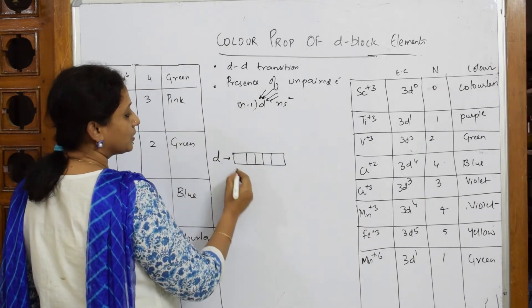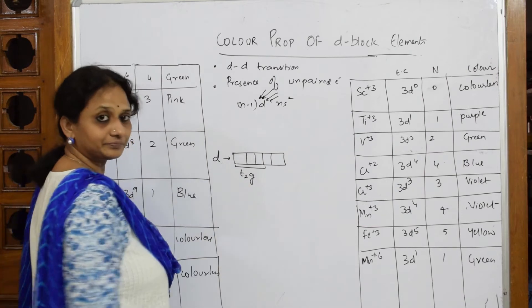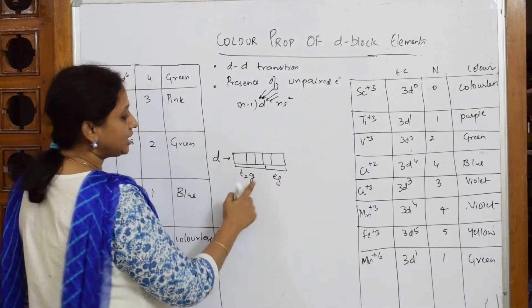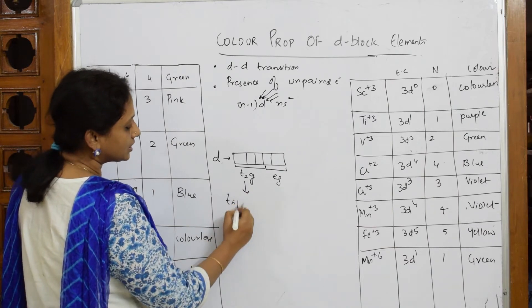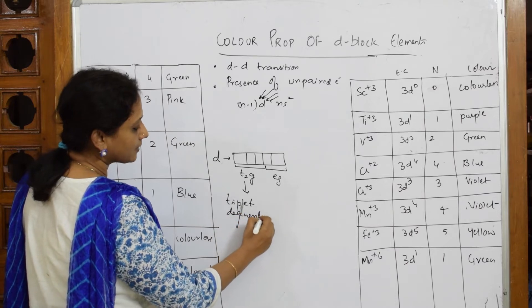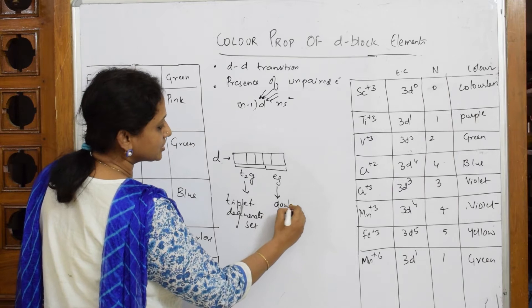t2g stands for triplet degenerate set, and eg stands for doublet degenerate set.